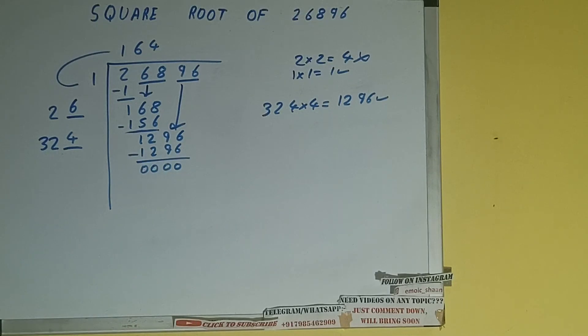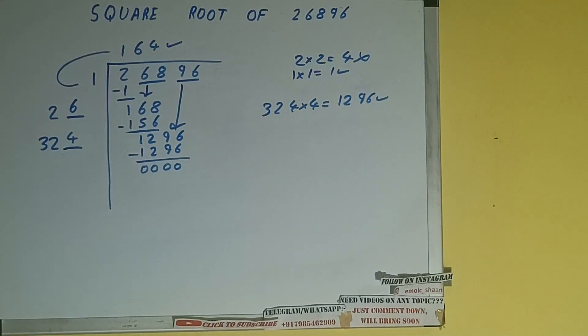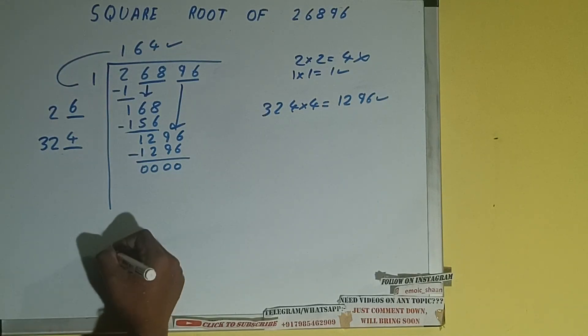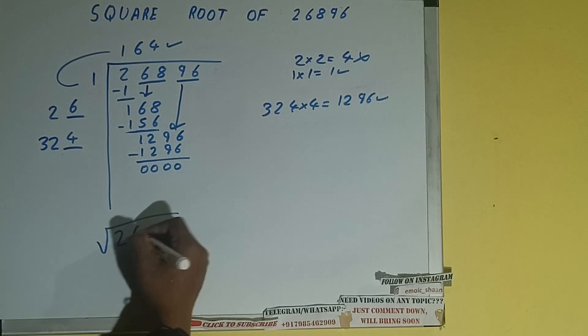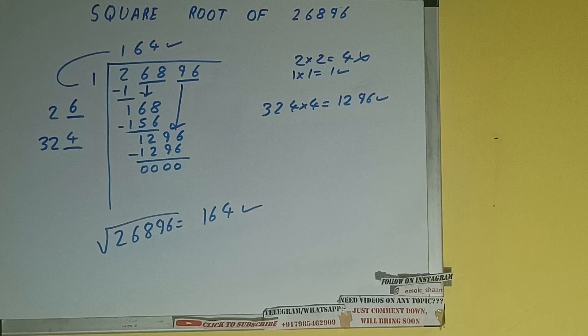1296 subtract, 0 will be left. Once we are left with 0, whatever is in the quotient will be the answer, that is 164. So square root of 26896 will be 164. That's it. If you found the video helpful, please hit the like button, do consider subscribing, and thanks for watching.